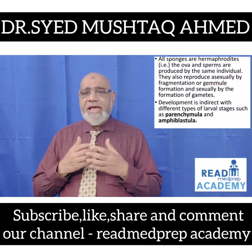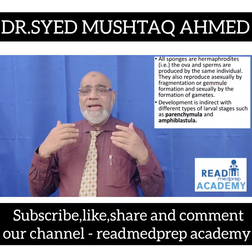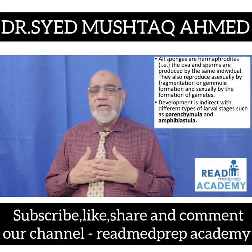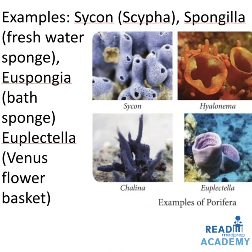All sponges are hermaphrodites — that is, the ova and the sperms are produced by the same individual. They also reproduce asexually by fragmentation or gemmule formation, and sexually by the formation of gametes. Development is indirect with different types of larval stages such as parenchymula and amphiblastula. In this image you can see the sexual reproduction of sponges, where the mature sponge produces sperm cells that enter another sponge, fertilize the egg cells, form a zygote, then dividing cells, a larva that settles and attaches to the surface forming a new sponge.